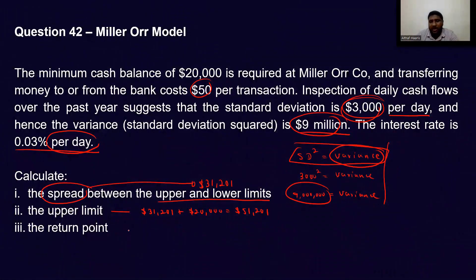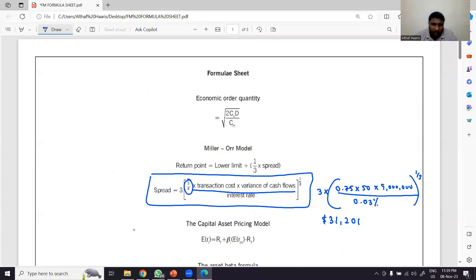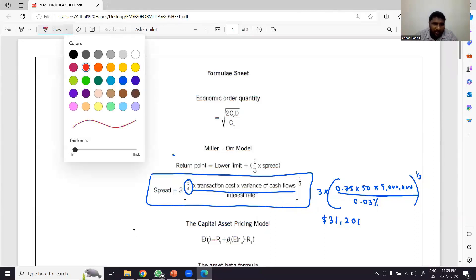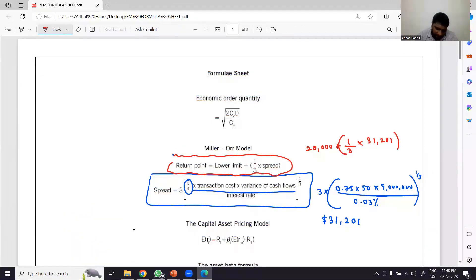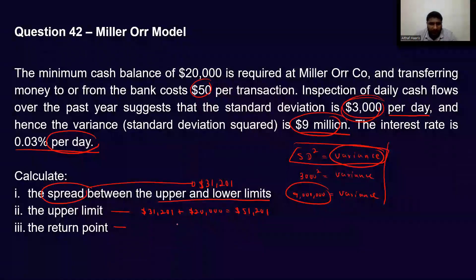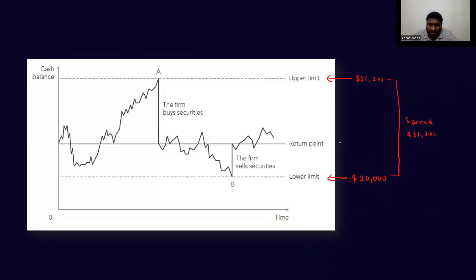Next, they ask us to calculate the return point. The formula is in the formula sheet. Return point equals lower limit plus one-third of the spread: 20,000 plus one-third of 31,201. One-third of 31,201 is approximately 10,400, so the return point is 30,400.